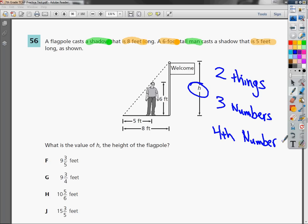Anytime I see two things, three numbers, and I'm looking for the fourth number, it's the 2, 3, 4th situation. So we're just going to set up a proportion here. I need to set up one for each thing. So I've got the man, and I've got the shadow for the flagpole.